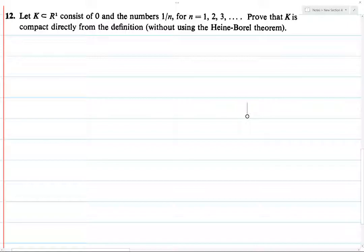So basically, just in a few words, what the bulk of this proof is, is that we want to prove that K is compact from definition. So we want to prove that every open cover has a finite subcover.